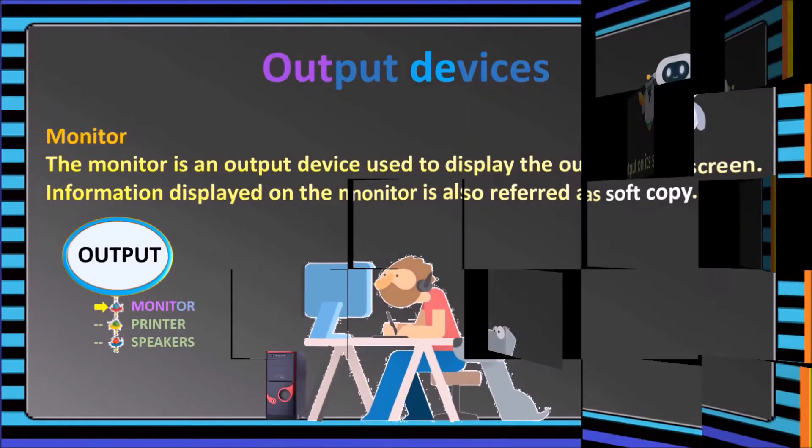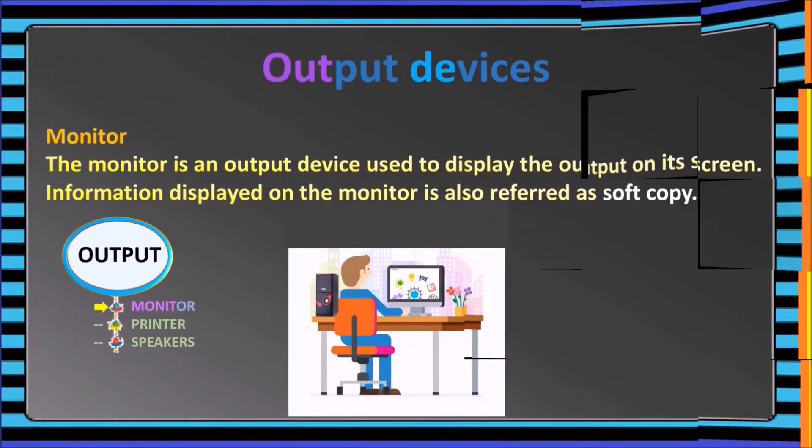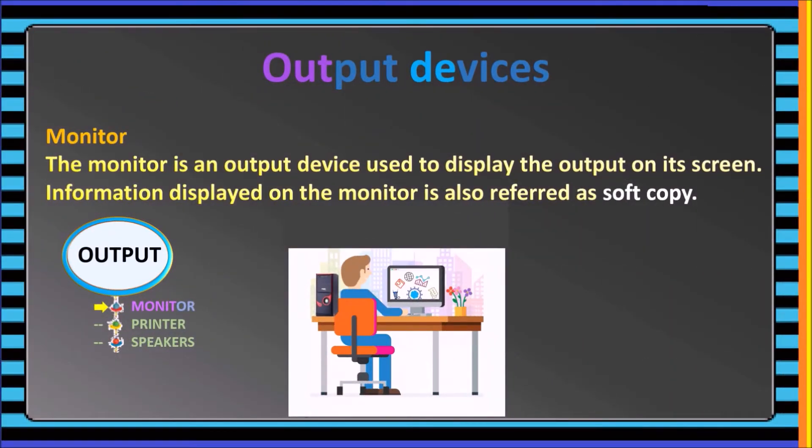Some basic output devices are: Monitor. A monitor is an output device which is used to display the output on its screen. Information displayed on the monitor is also referred to as soft copy.